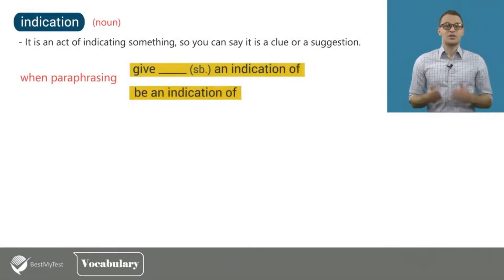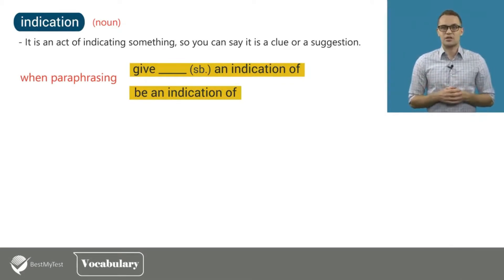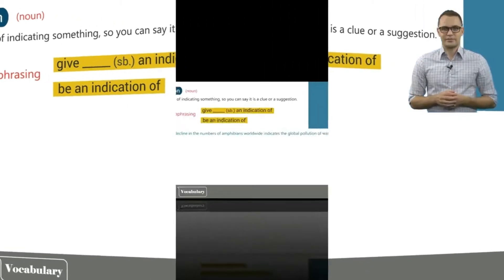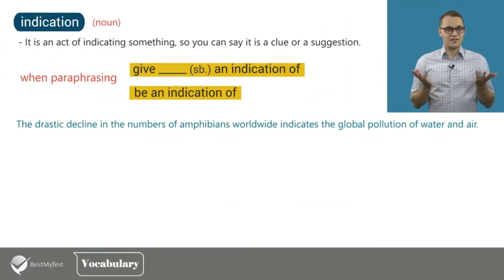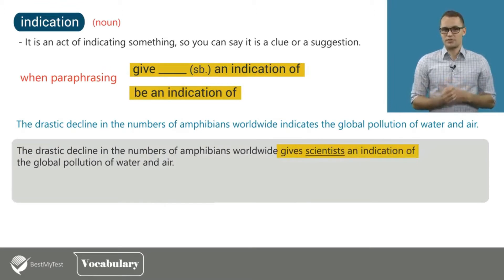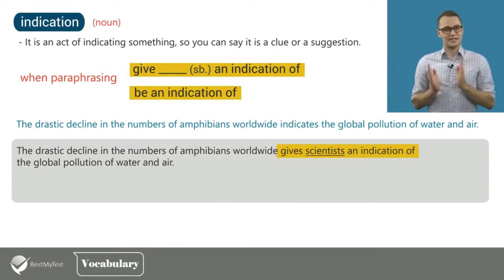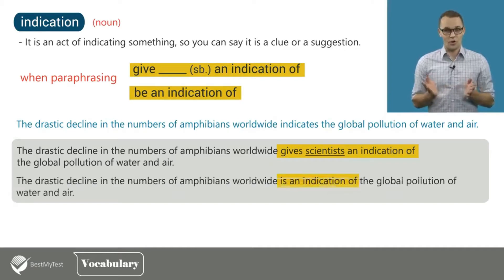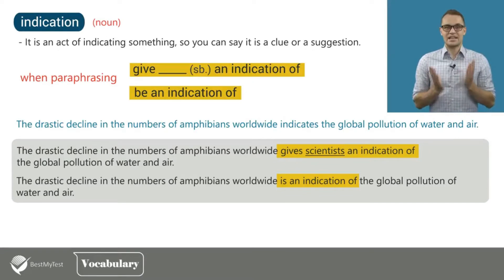When paraphrasing, you can use 'give somebody an indication of' or 'be an indication of' instead of indicate. For example, 'the drastic decline in the numbers of amphibians worldwide indicates the global pollution of water and air' can be paraphrased to 'the drastic decline in the numbers of amphibians worldwide gives scientists an indication of the global pollution of water and air,' or 'is an indication of the global pollution of water and air.'